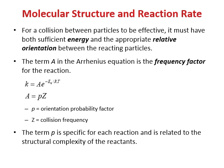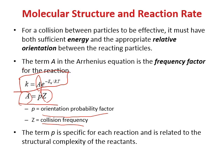In the Arrhenius equation, the frequency factor A is a product of the orientation probability factor and the collision frequency. Collision frequency is how many collisions occur per second. The orientation probability factor relates to how molecules orient when they collide — only certain orientations lead to product.